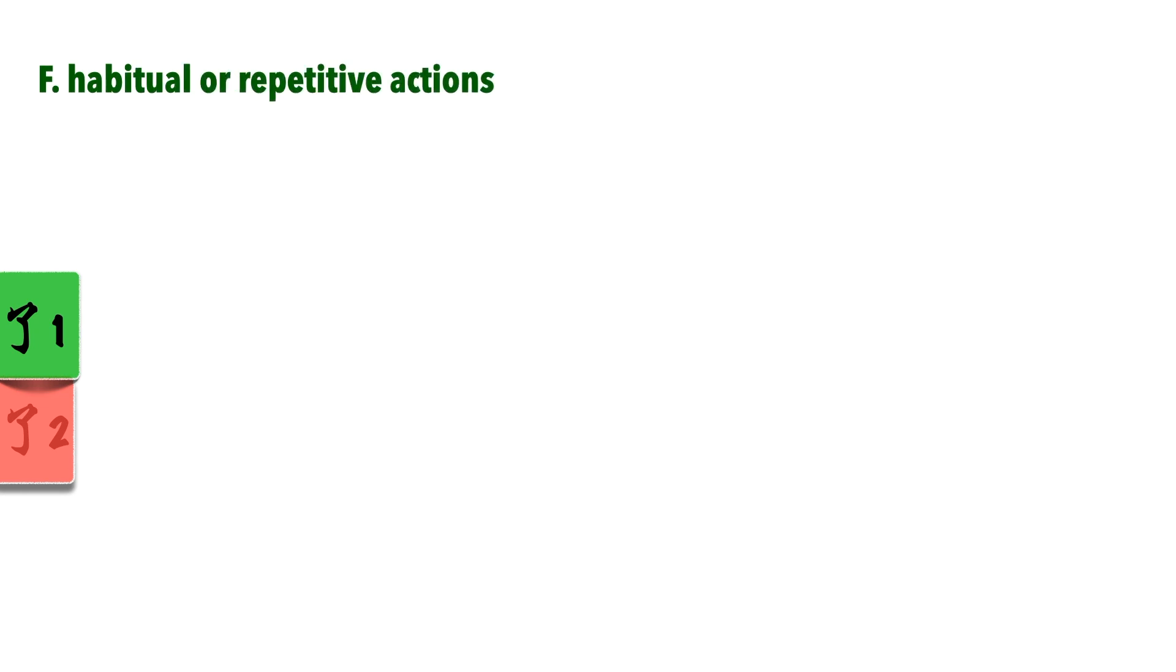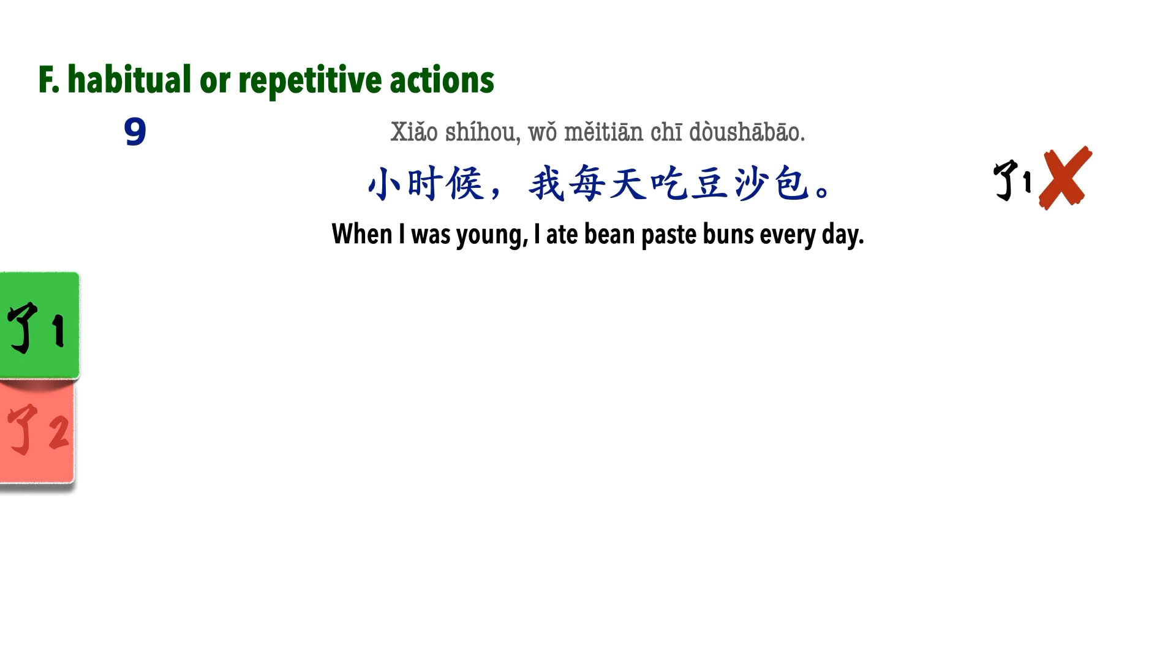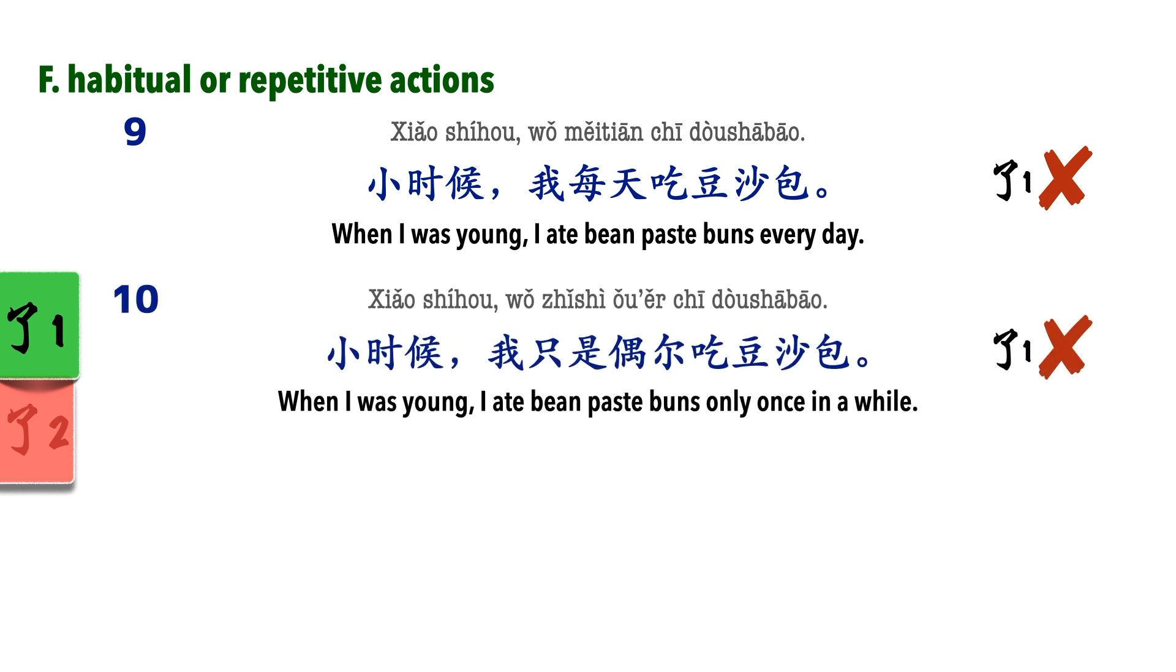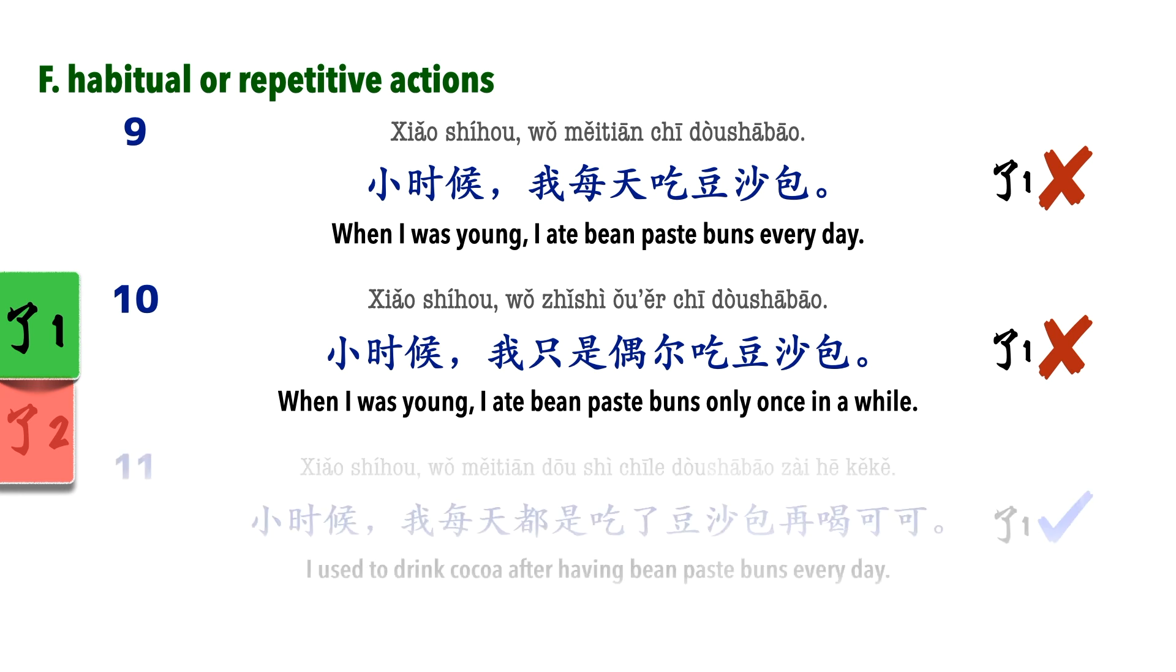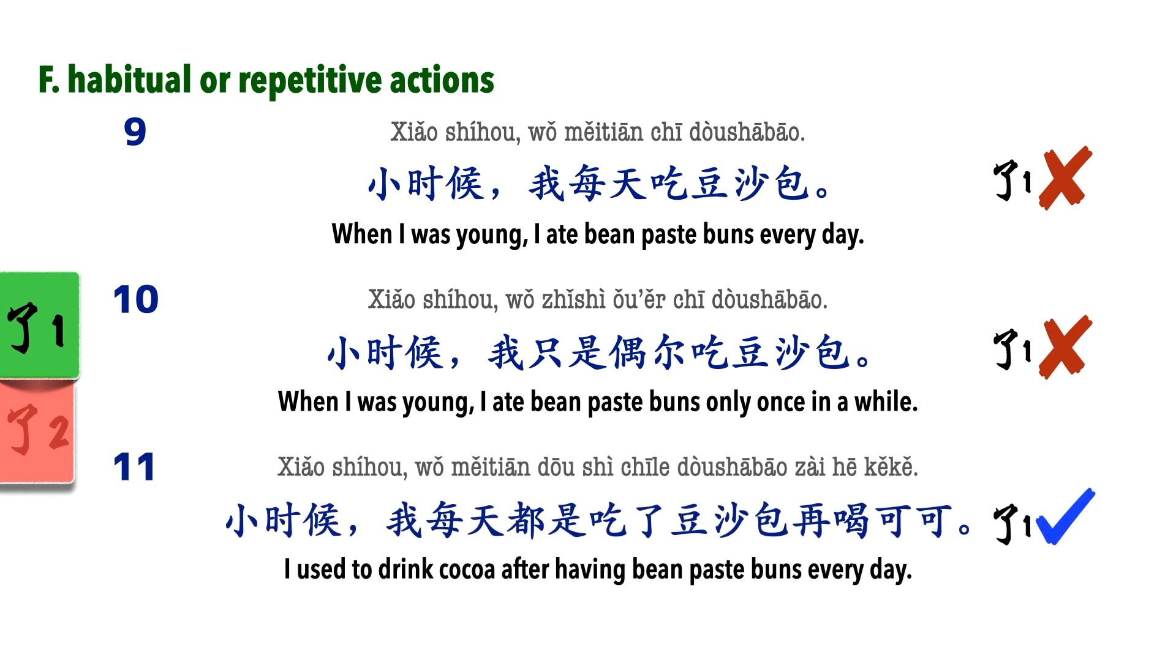Habitual or repetitive actions. This is where a lot of learners make mistakes. In habitual actions, even if the action is done, 勒1 is unnecessary. 小时候我每天吃豆沙包. Even if the occurrence is rare, we don't use it: 小时候我只是偶尔吃豆沙包. However, if indicating completion is important, 勒1 has to be used: 小时候我每天都是吃了豆沙包再喝可可.